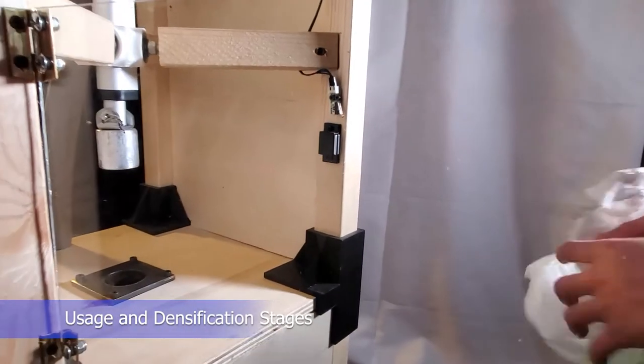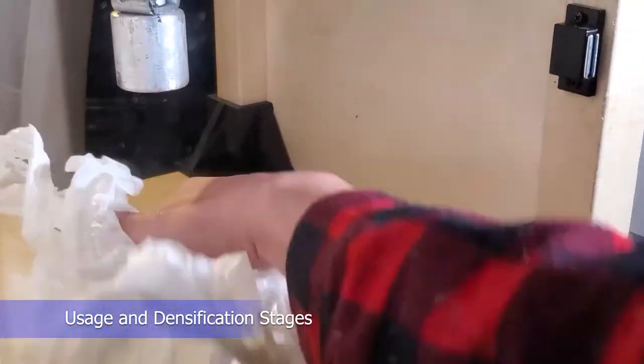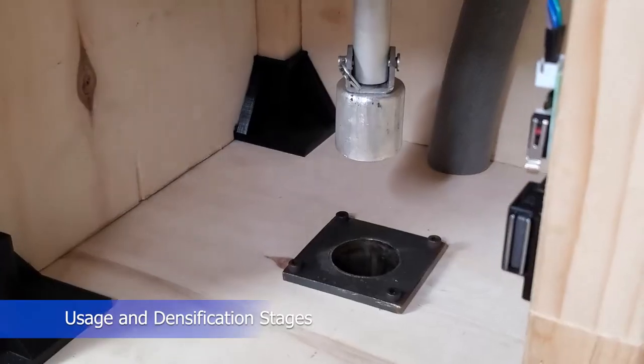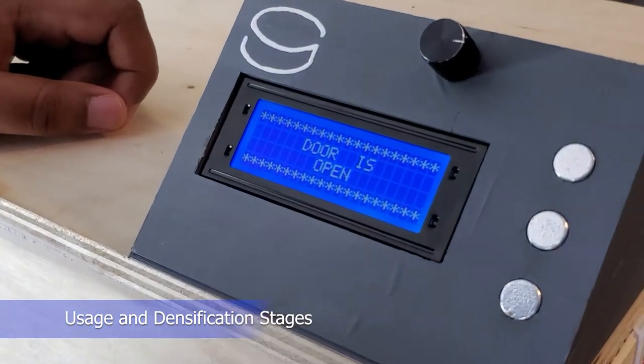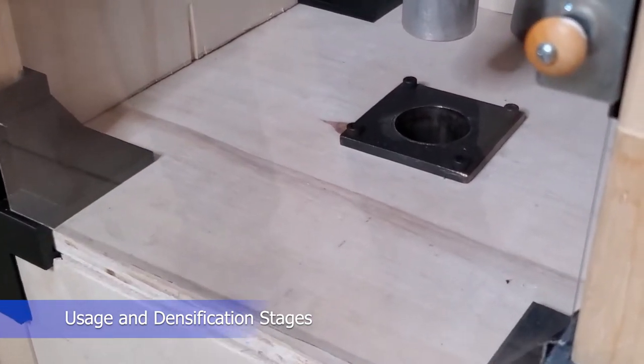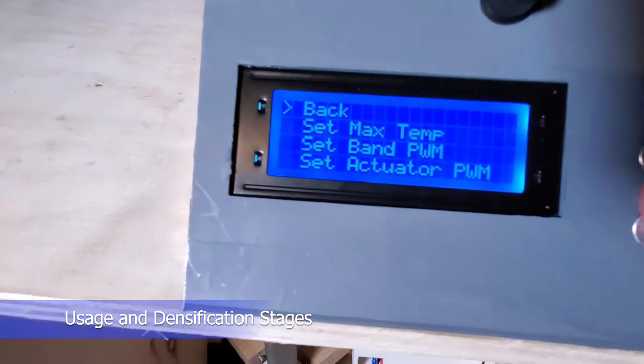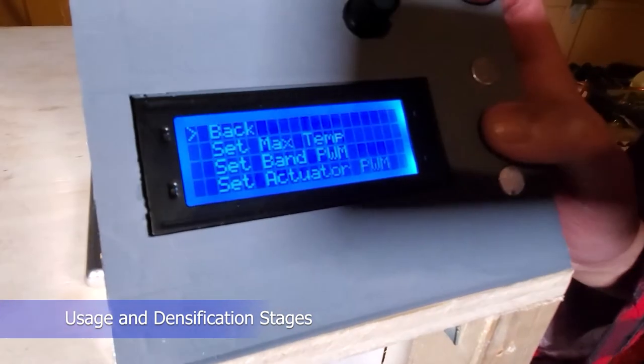To use Densify, the user will open the protective door and input their plastic films in the compaction chamber. The door is a key safety feature in our design as the appliance is programmed to pause all processes if opened and only resume once it is closed. To start the machine, the user will navigate the on-screen menu using the UI at the top of the appliance.